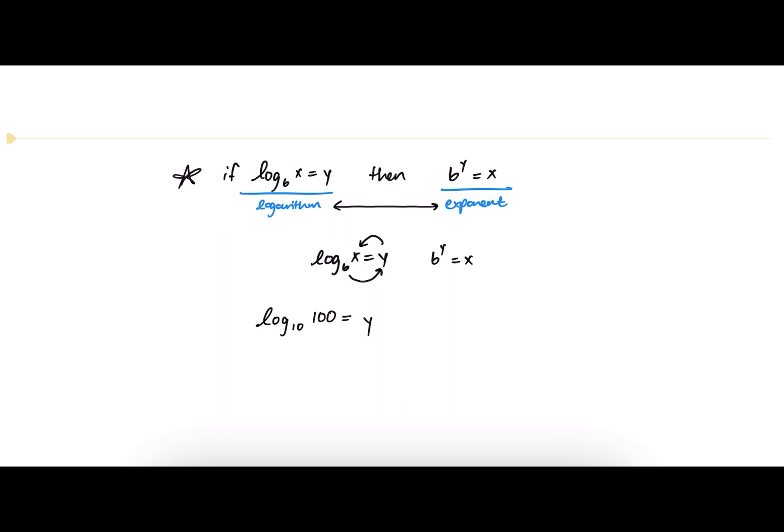And just looking at the rule written above here, we know that b is equivalent to 10, so we can write 10 as our base in exponent form. 100 is equal to x, and so we can put that on the other side of the equal sign over here. And y is our unknown. So these two equations are representing the same thing.